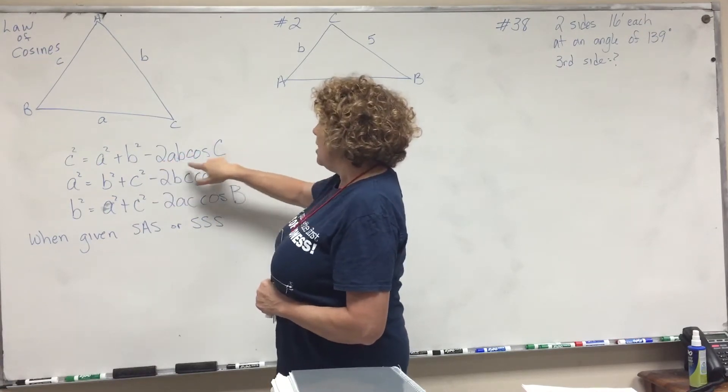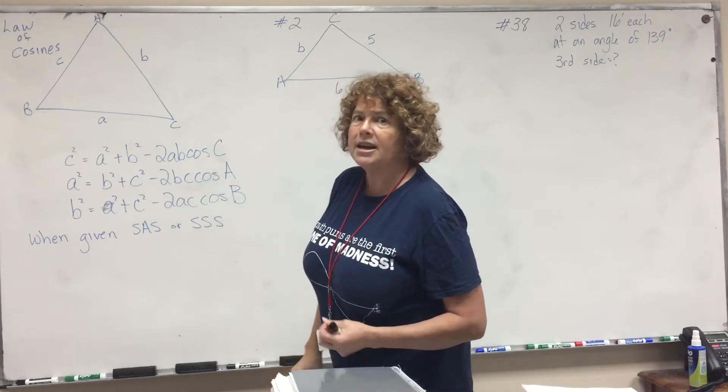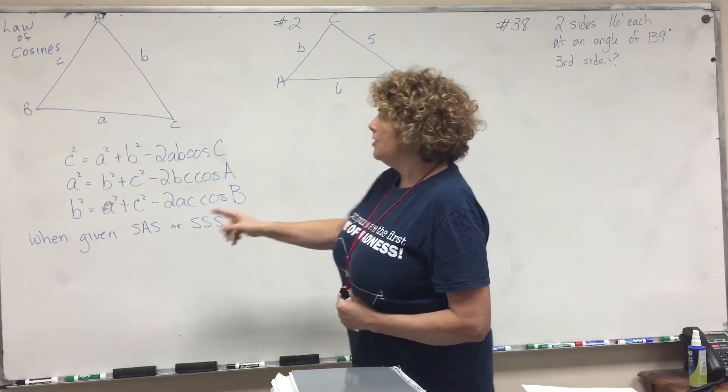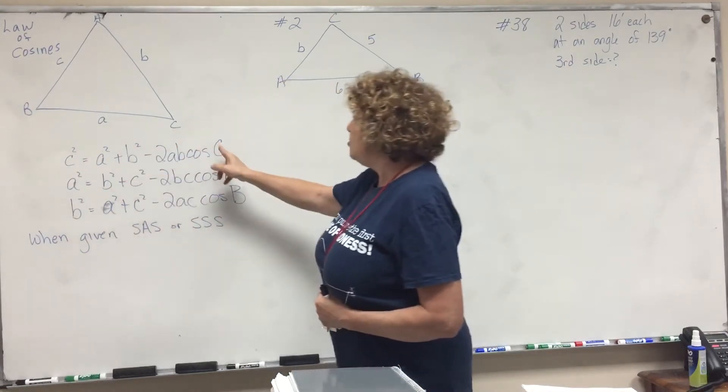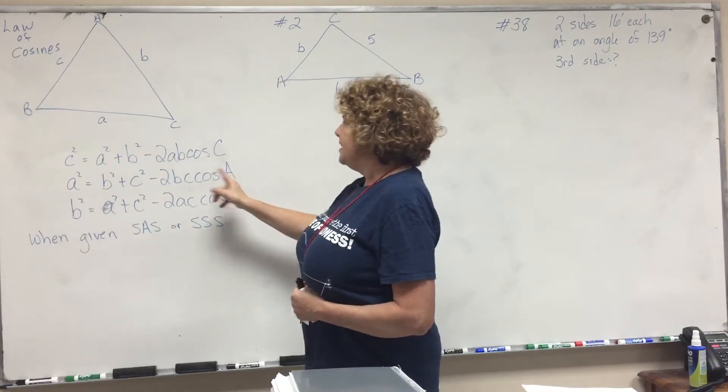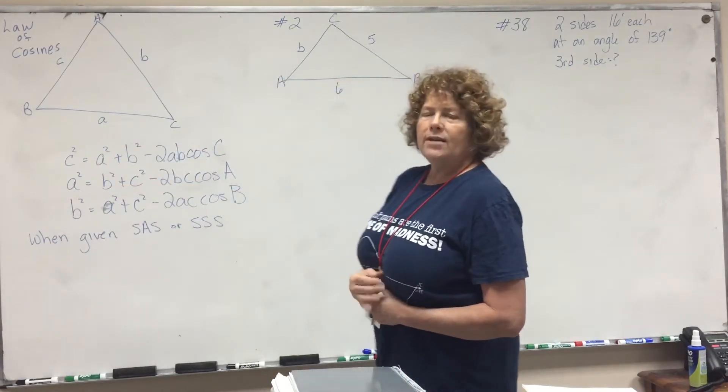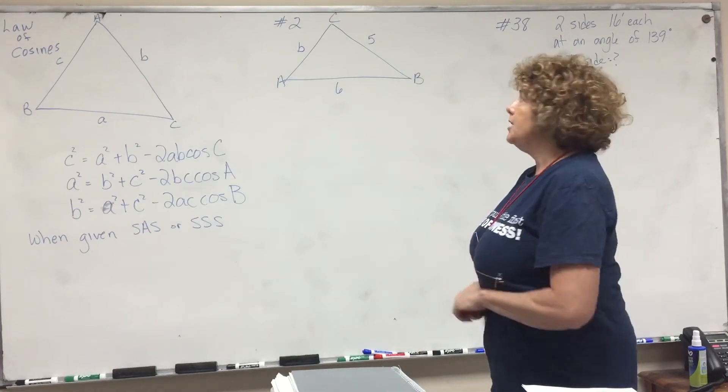Now this is all one term. You can't break this off of cosine of c. So when you're solving, be very careful. So notice, little c is on one side, big C is on the other. Little a is on one side, big A is on the other, and the other two sides go in there. So you don't have to memorize it as long as you've got it written in your notebook.